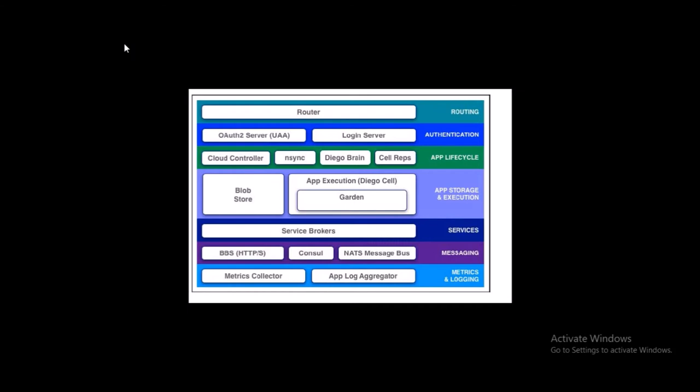Next is Messaging. Cloud Foundry component VMs communicate with each other internally through HTTP or HTTPS, sharing temporary messages and data stored in Diego's Postgres services. BOSH Director inserts a host DNS server on each VM, and all VMs keep up-to-date DNS records for all other VMs for communication. The final component is Metrics and Logging, which enables and directs system and application logs to developers.